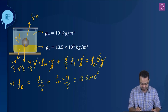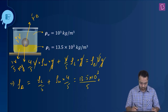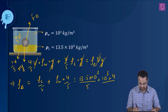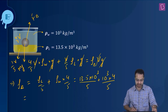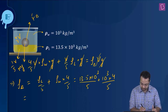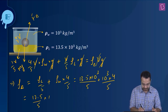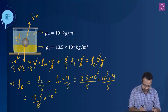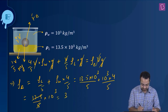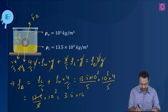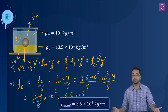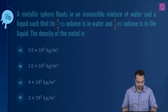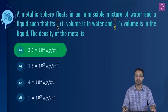Calculating: the numerator gives 13.5 × 10³ divided by 5 plus 10³ × 4/5. Combining over denominator 5 gives (13.5 + 4) = 17.5, so 17.5/5 × 10³ = 3.5 × 10³ kg/m³. The answer is 3.5 × 10³ kg/m³, and option A is the correct option.